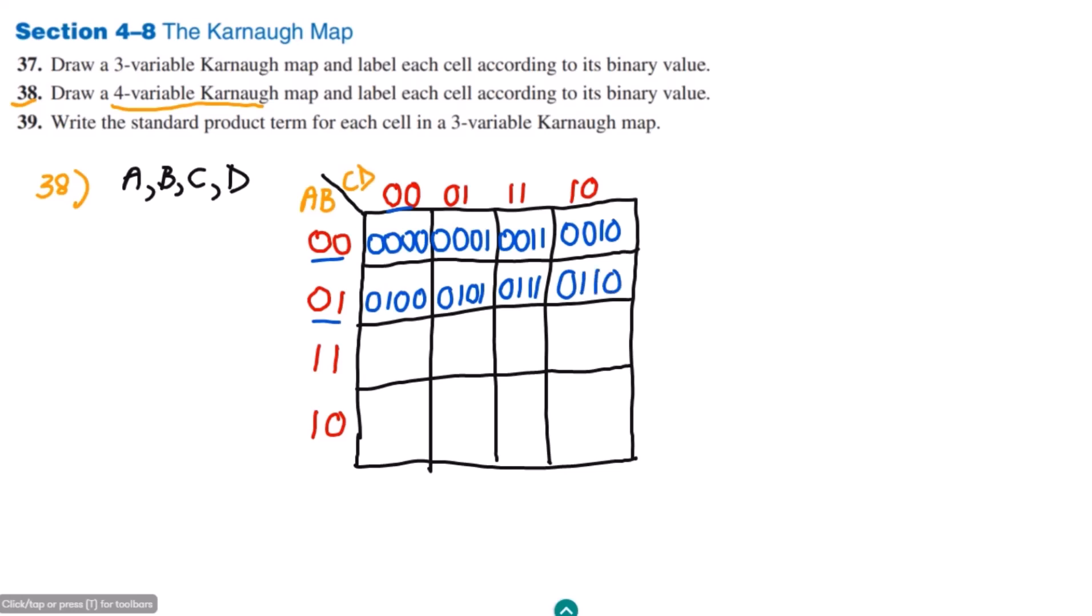For the third row, the row is 1, 1, the column is 0, 0. The row is 1, 1 and the column is 0, 1. The row is 1, 1, column is 1, 1 as well, and row is 1, 1, column is 1, 0.